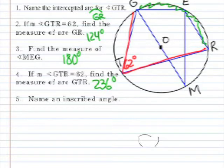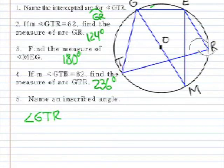Now let's name an inscribed angle. Well, we already have one we've been working with and that would be angle GTR. Any inscribed angle is an angle where the vertex is on the circle itself. So we have another one here. Let's call it TGM. And from the same vertex of G, we can talk about MGE.